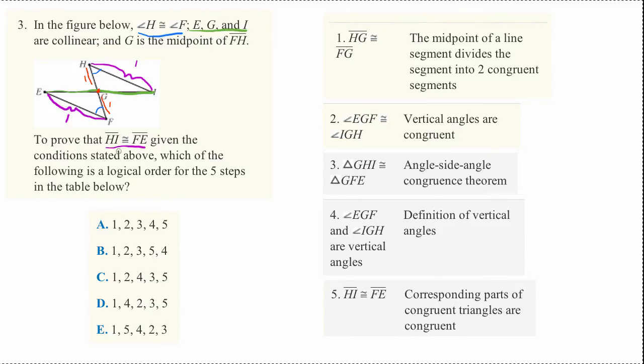We want something that proves exactly that to come at the end of the proof. And here, we see step five does that. So here in step five, they say HI is congruent to FE, exactly what we're trying to prove.